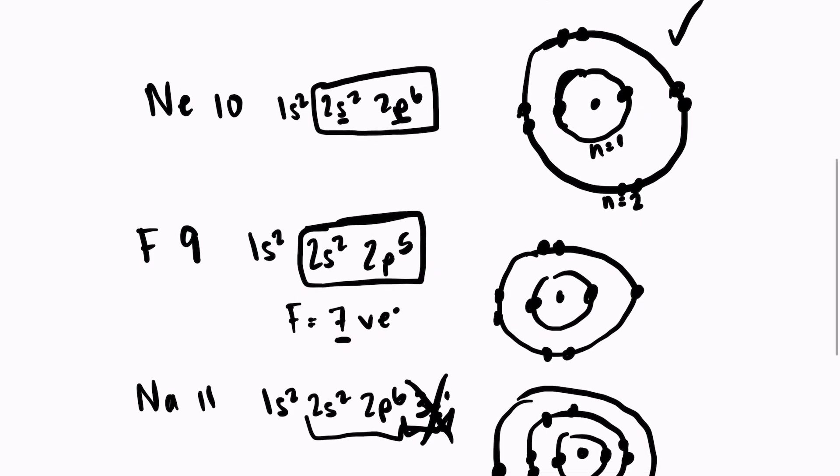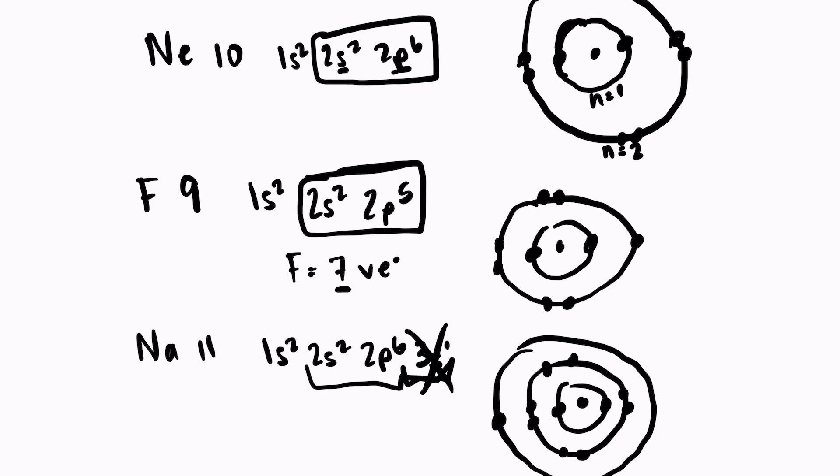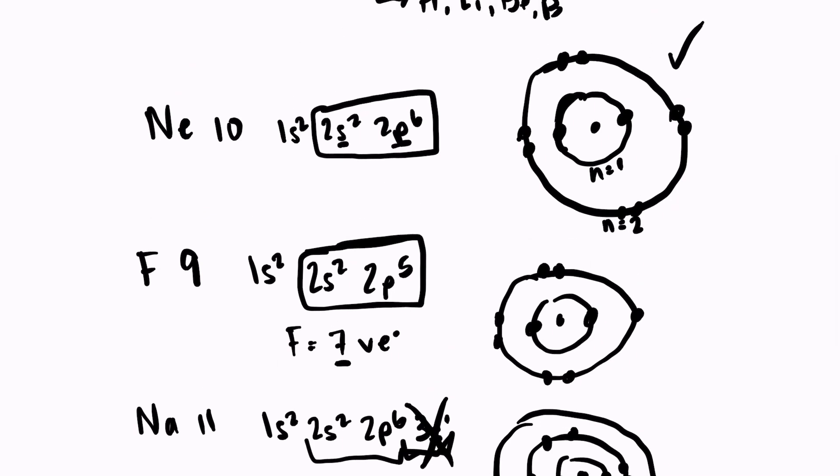So all the elements on the periodic table will do what it takes to become stable like the noble gases. They all want to have eight valence electrons in order to be stable. And they will do what it takes to get there through chemical bonding.